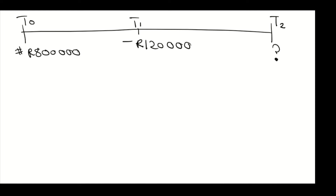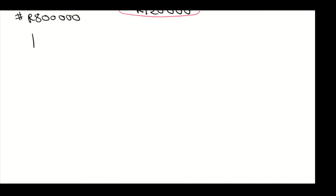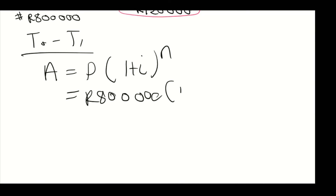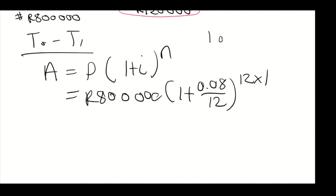From t0 to t1, we use A = P(1 + i)^n. The initial investment P is 800,000, the interest rate is 0.08 divided by 12 since it is compounded monthly, and n is 12 times 1 since we are going from t0 to t1, which is one year.